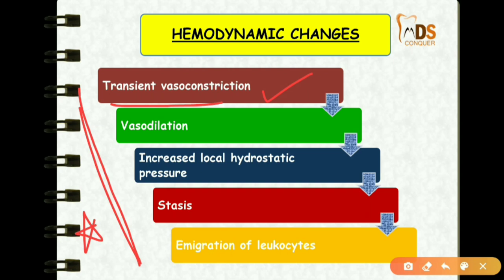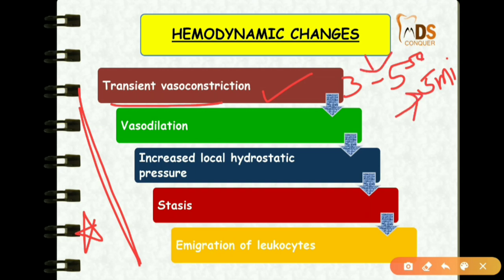If there is a small injury, blood flow will be re-established within 3 to 5 seconds. If there is a big injury, this vasoconstriction may last even for 5 minutes. So it is seconds for small injury and 5 minutes for large injury. This is the transient vasoconstriction.